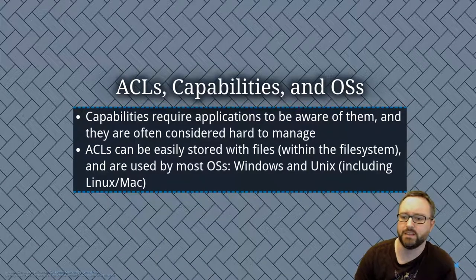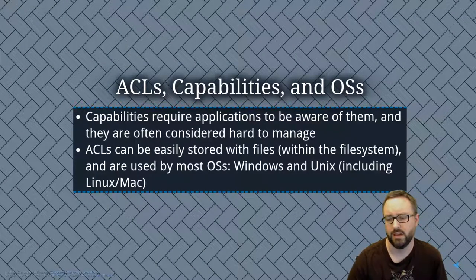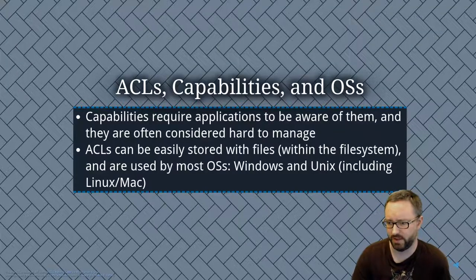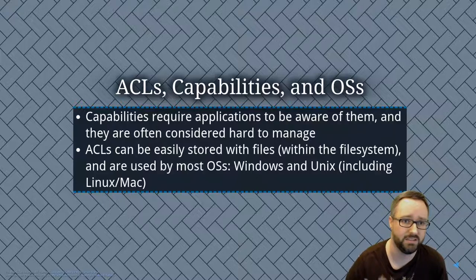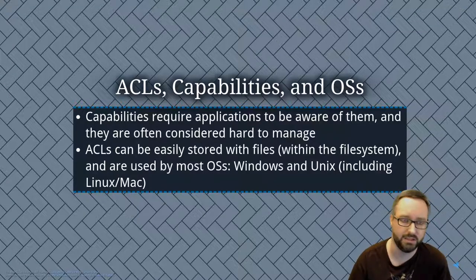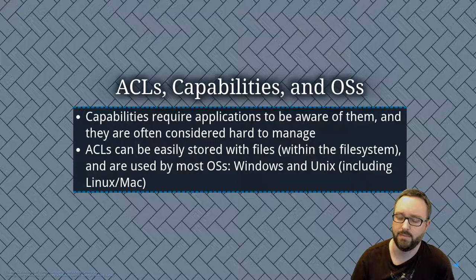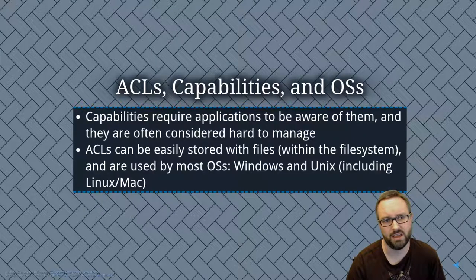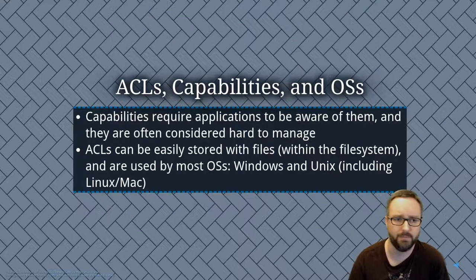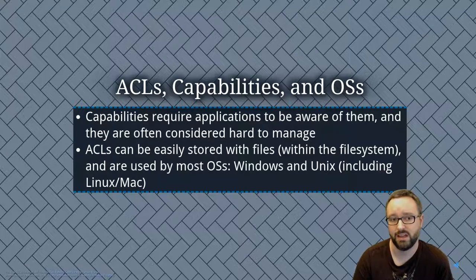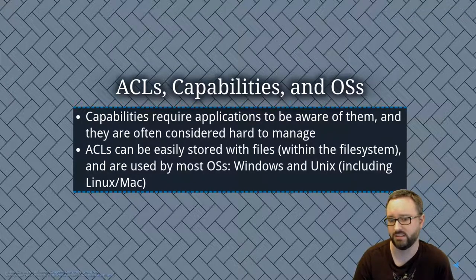Capabilities require applications to be aware of them, they're often considered hard to manage, whereas ACLs can be easily stored with files within the file system and that's why it's the thing that's most commonly used. Windows and Unix including Linux and Mac all heavily use ACLs. You'll see the term access control list used elsewhere in other areas within security, but generally what it means is that you're attaching the permissions and what's allowed to happen to the file or the object that's being accessed.